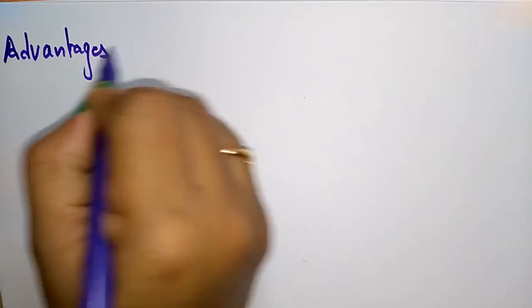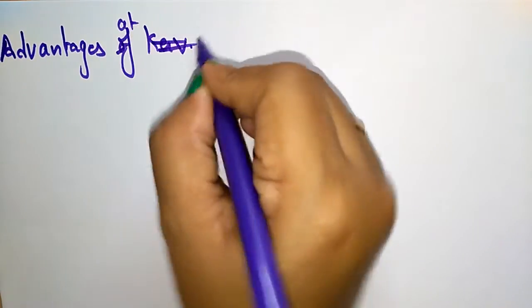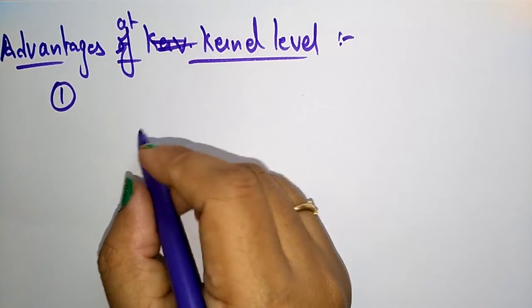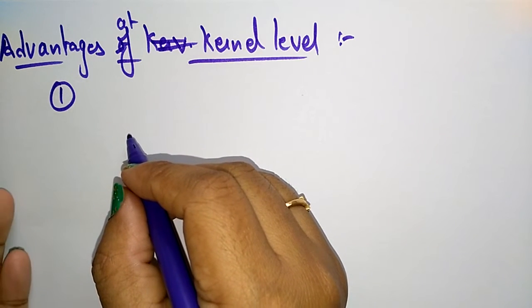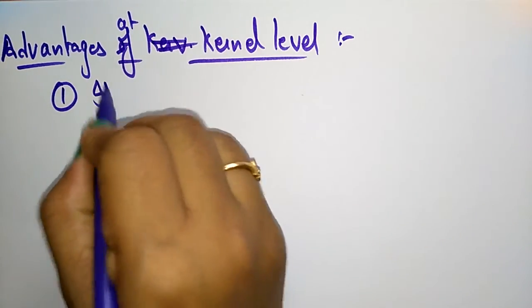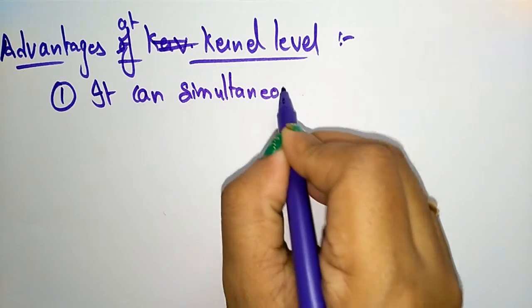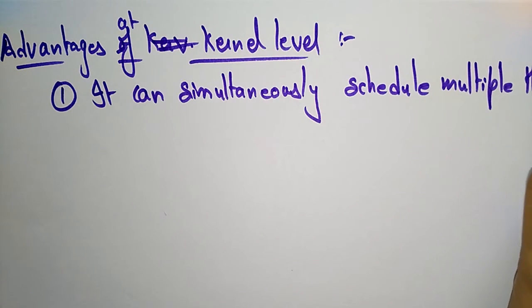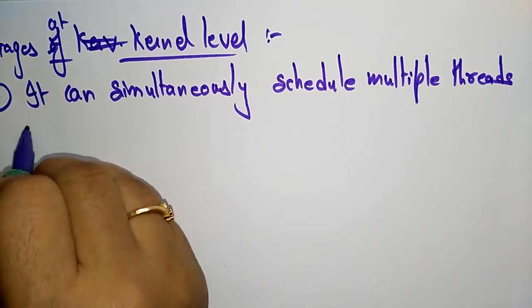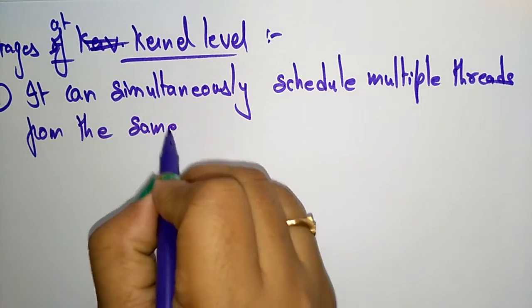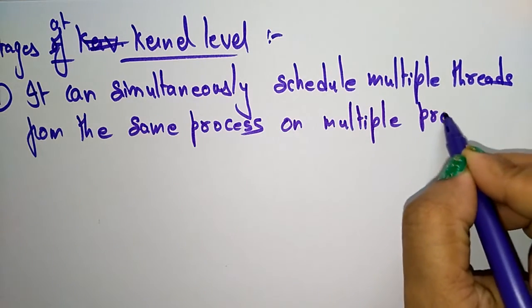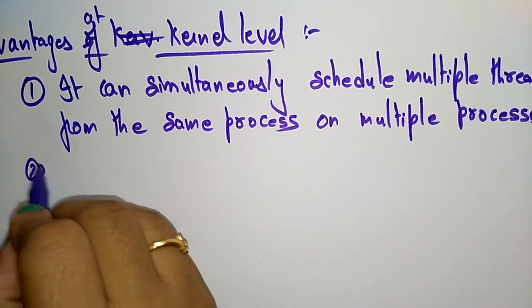Now coming to the advantages and disadvantages at the kernel level. First advantage: the kernel can simultaneously schedule multiple threads from the same process on multiple processors.